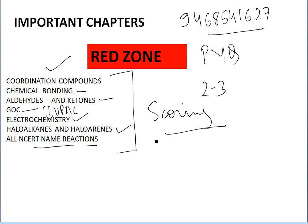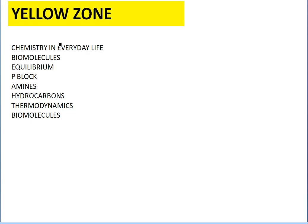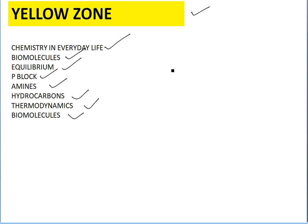Next is the yellow zone, which contains less important but still essential chapters — you should not escape these either. This includes chemistry in everyday life, biomolecules, equilibrium, P-block elements, amines, hydrocarbons, and thermodynamics. I have a strong opinion that questions from these chapters are definitely coming in the NEET exam. Biomolecules, equilibrium — both ionic and chemical equilibrium — these are class 11th chapters.